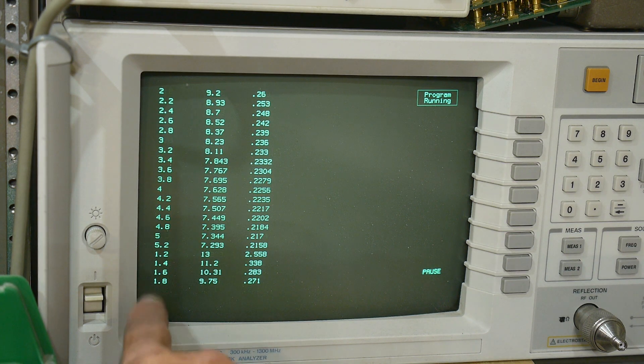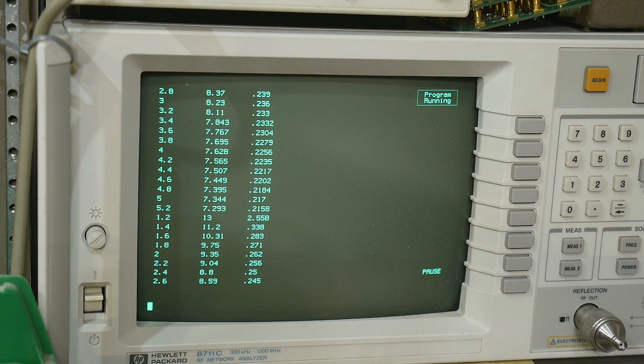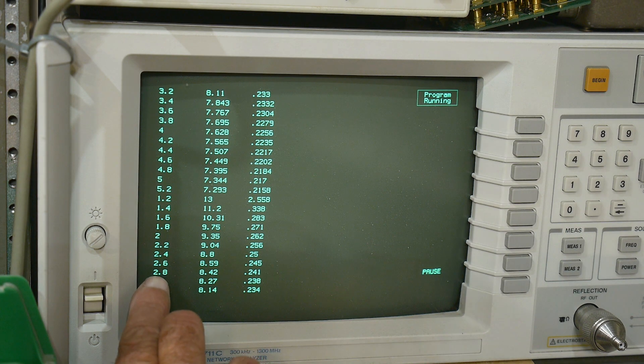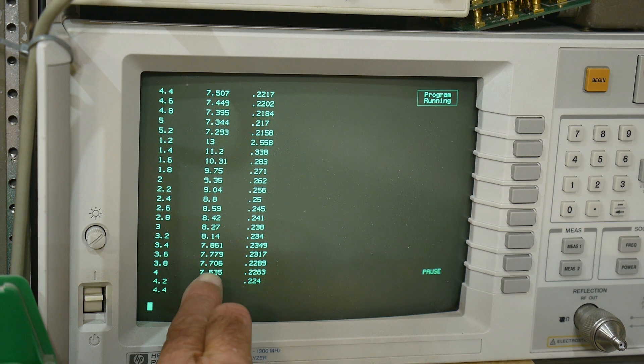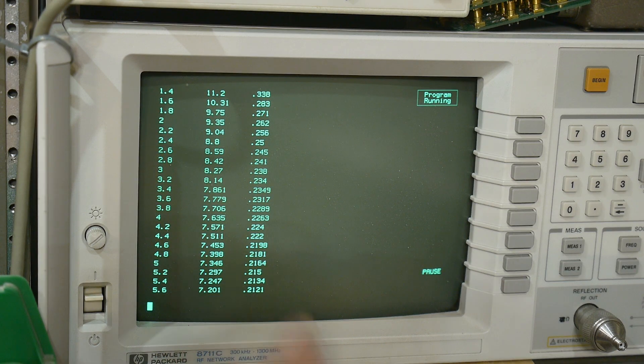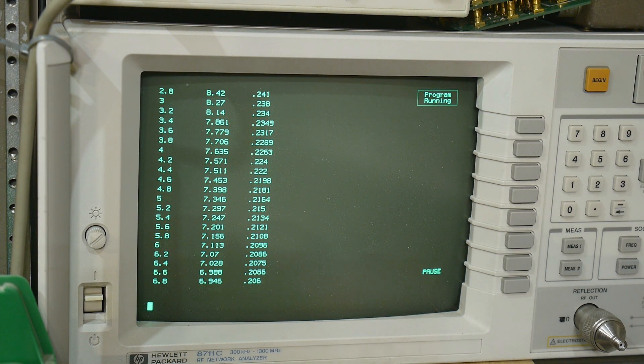All right, so it's stepping through 1.2, 2.2, so it's stepping through all the volts. This is volts. This is the capacitance in picofarads, and this is the D factor, and it goes up to 10 volts.